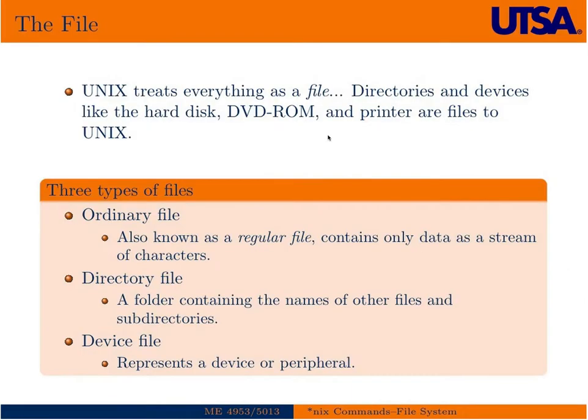Unix treats everything as a file — directories and devices. Devices would be hard disks, USB drives, DVD-ROMs, printers, and other things. You can access them in the directory structure, in the file structure, just as if they were an ordinary file.